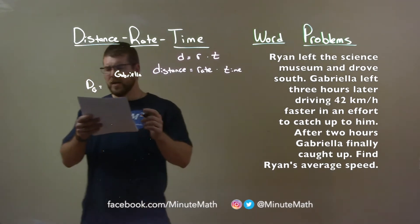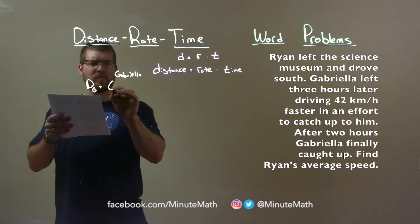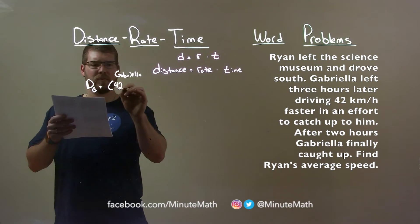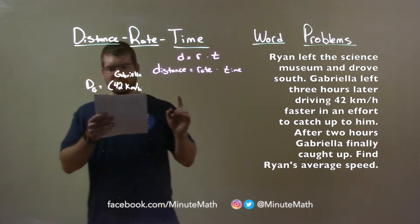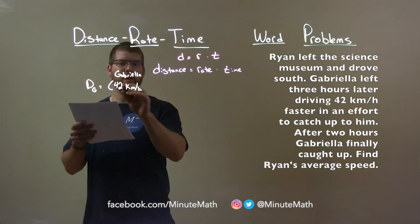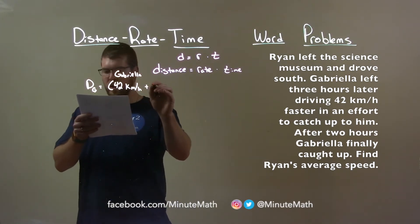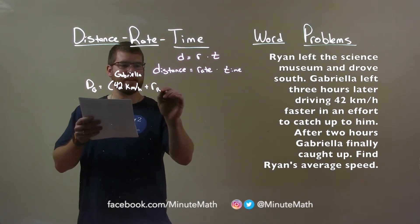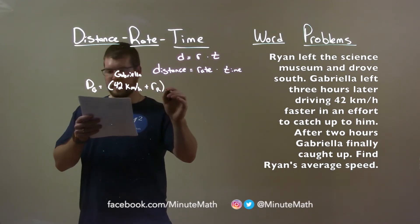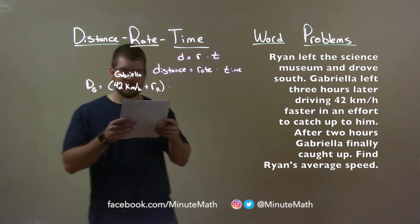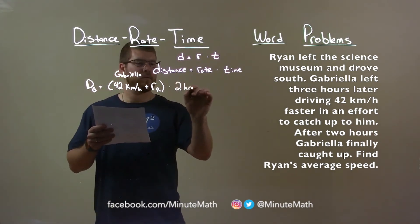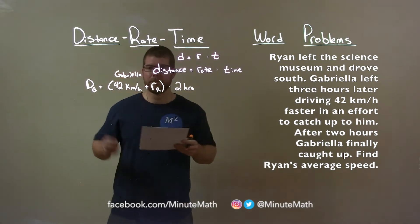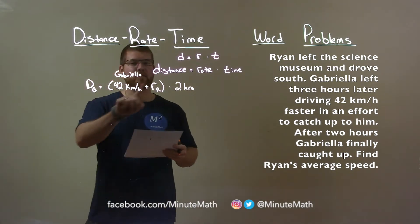The distance for Gabriella is equal to, well, the rate she's going is 42 km per hour, faster than Ryan's. So 42 km per hour plus Ryan's rate, that's our R, times, well, how many hours? After two hours of driving, she caught up. Now that's the distance for Gabriella.